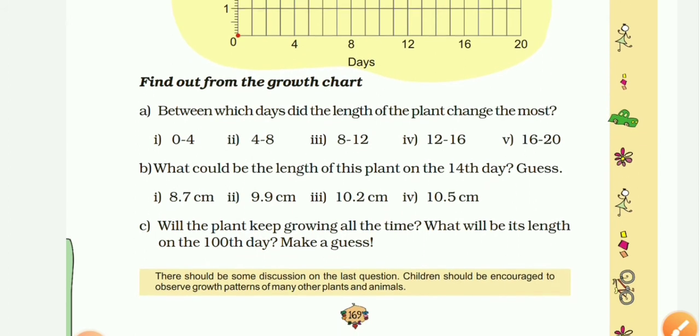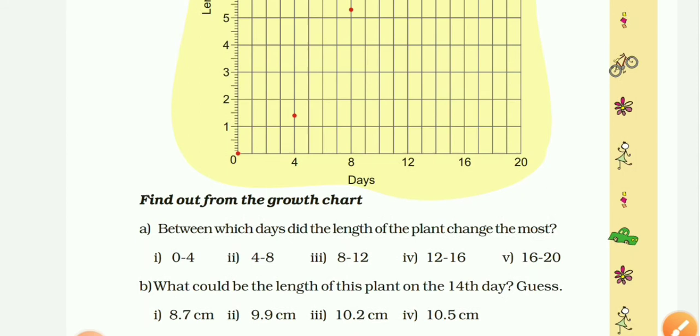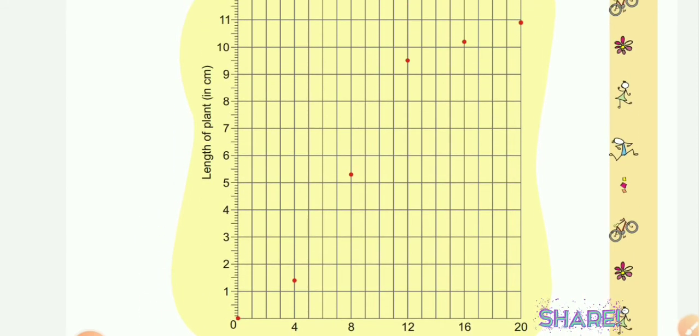Now it's time to answer some questions. Find out from the growth chart: between which days did the length of the plant change the most? First, 0 to 4; second, 4 to 8; third, 8 to 12; fourth, 12 to 16 days; and last is 16 to 20 days. For that, we have to check the chart.